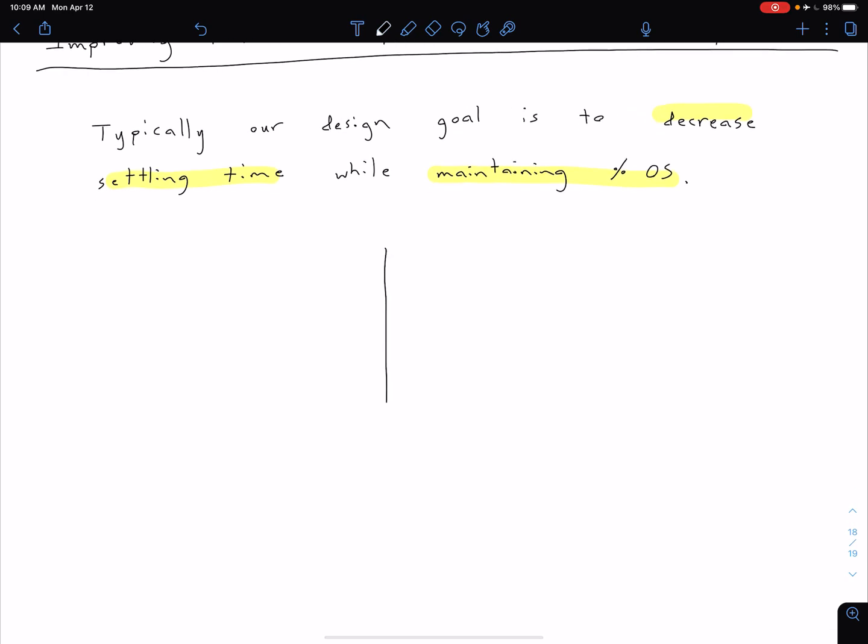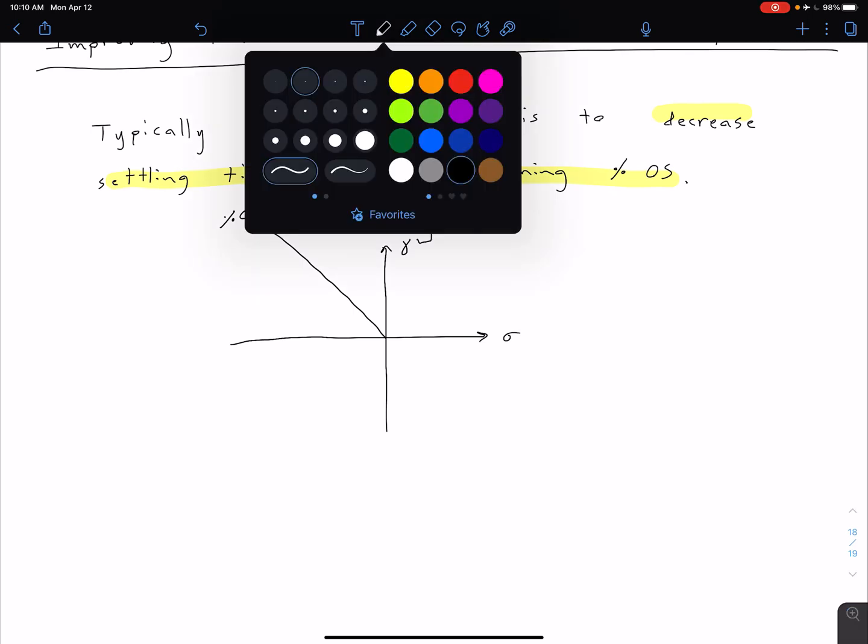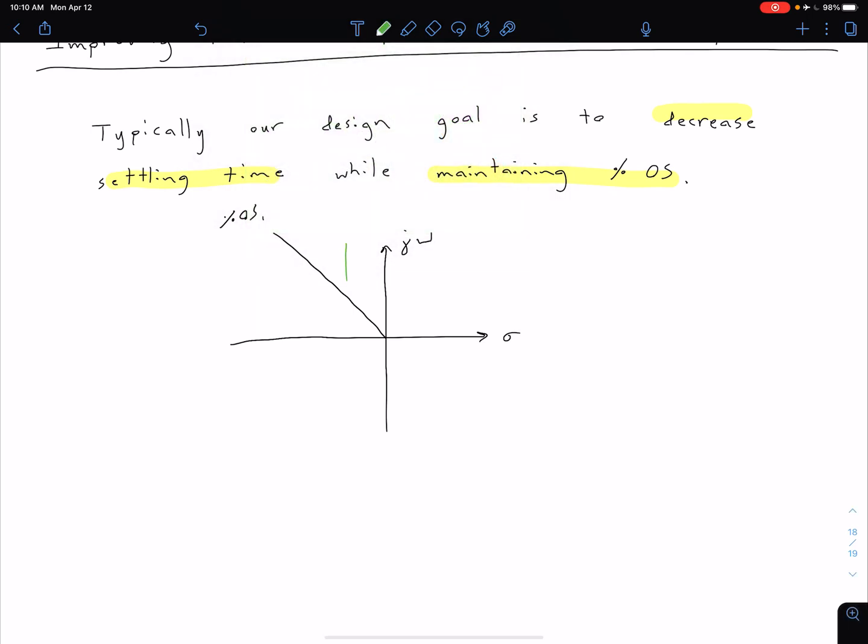We can think about what this looks like in our complex plane. If we have our real axis, sigma, and our imaginary axis j omega, remember that a constant percent overshoot is going to correspond to some radial line. So this could be percent overshoot one, for instance. What we're saying is we want to decrease our settling time, and remember settling time is going to correspond to vertical lines in our complex plane. We could say this was maybe our initial settling time TS1, and now we want to reduce that settling time, so we're going to move further left in our S-plane. So if this corresponds to TS2, this would be TS2 less than TS1.